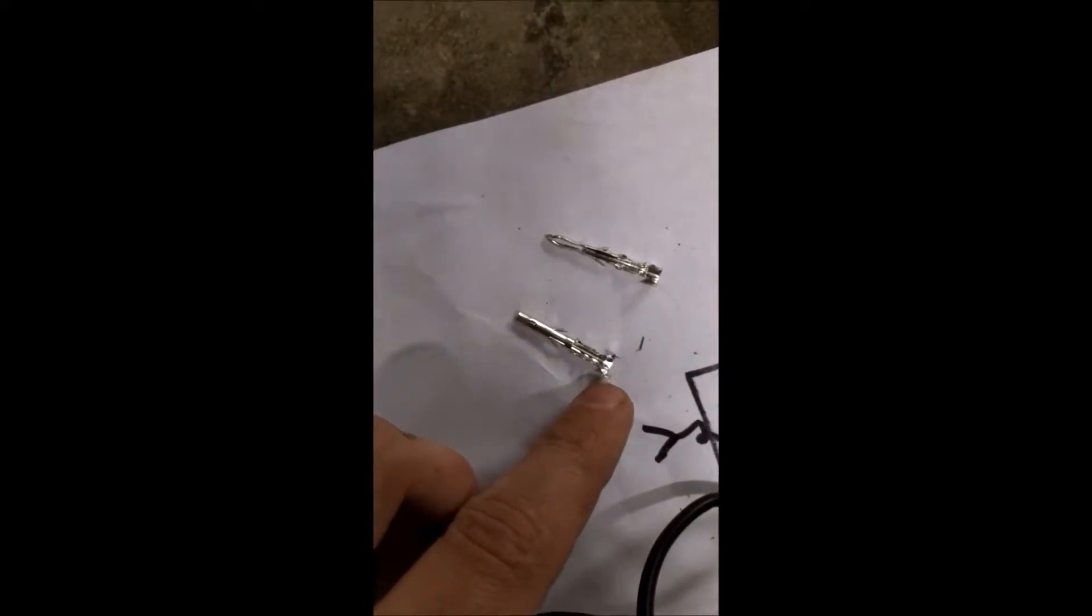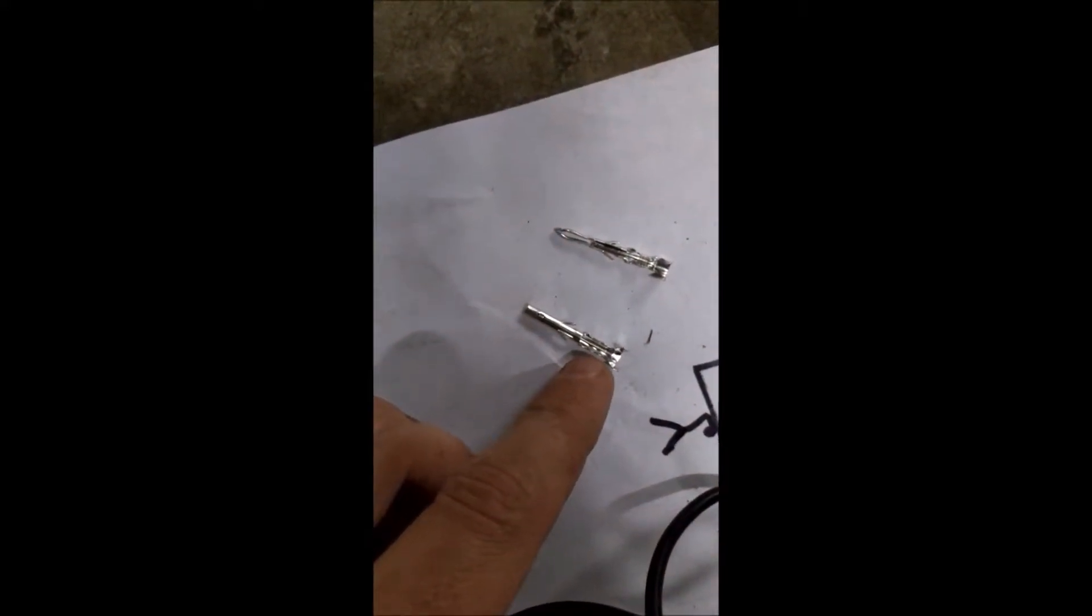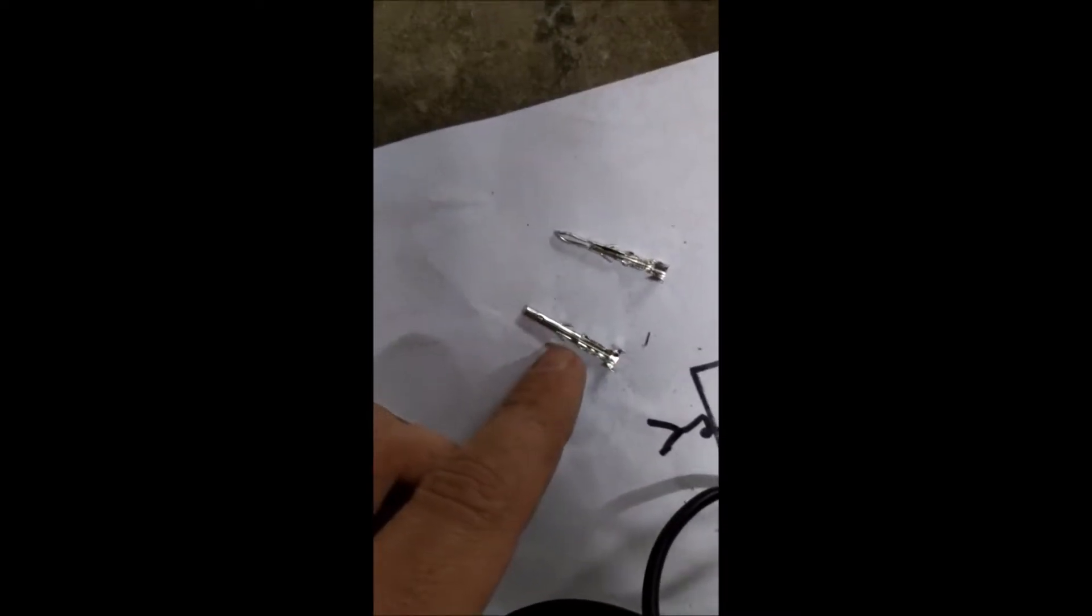I'm gonna get my male connector and slide it over, then crimp it down. On top you have the male connector, on the bottom the female connector. Both have a big tab back here for the gasket and two tabs to crimp down on the wire. Don't go any further past that.